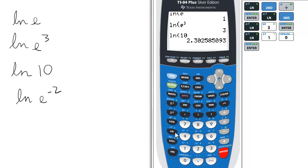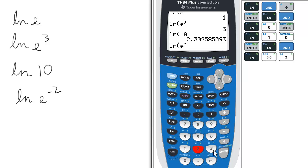Lastly, we can take the ln of e to the negative 2. So we press the second key and ln for e to a power, and negative 2. So the ln of e to the negative 2 is negative 2.